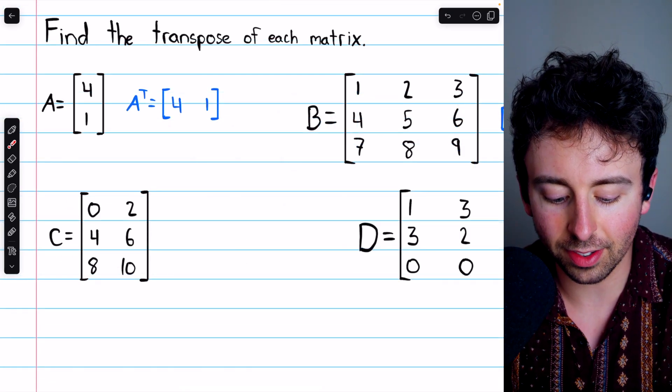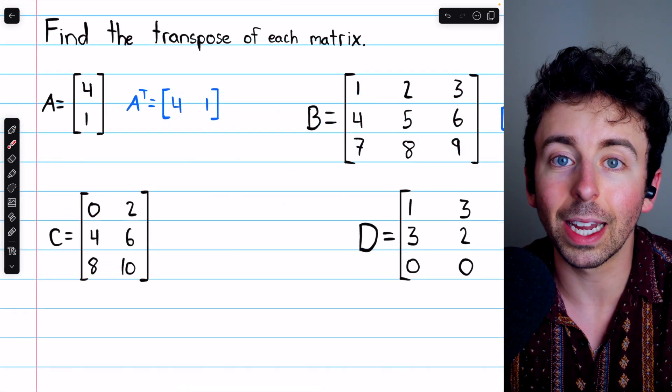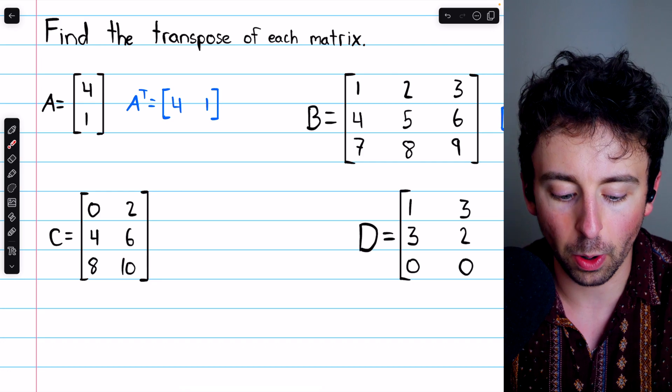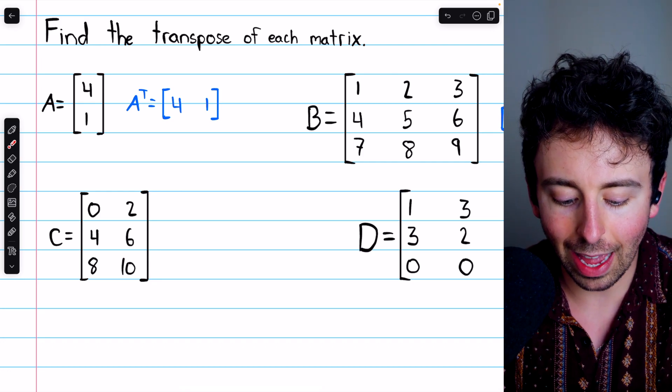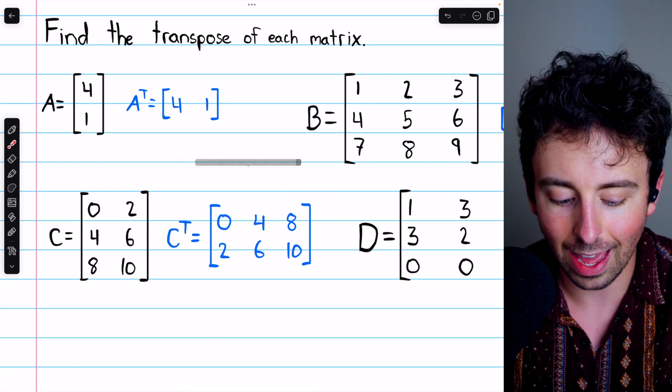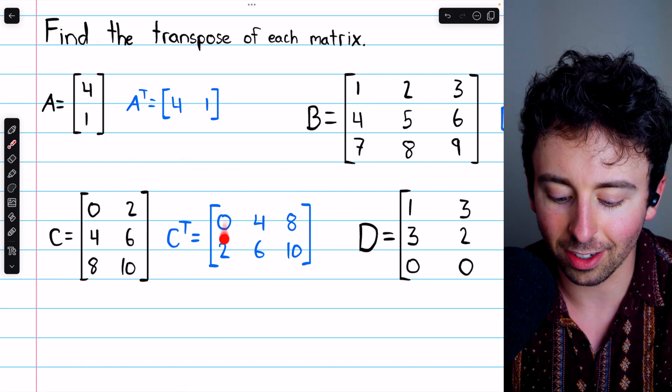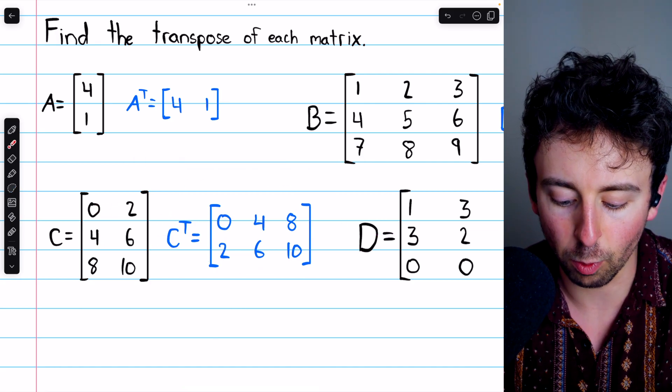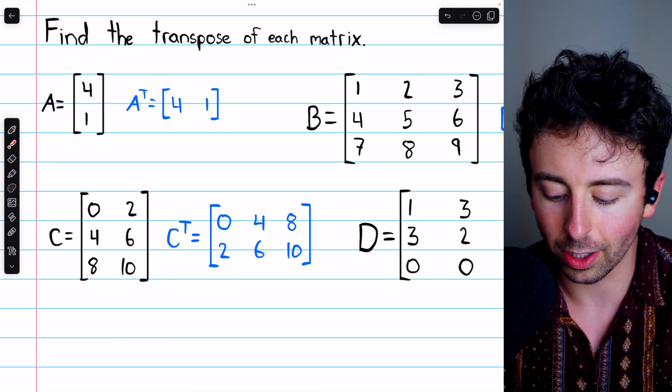Now what about C? Well, C is three by two, so C transpose will be two by three, and we'll have C's rows as its columns, and it looks like that. There's a row, and it's a column in C transpose. Second row, second column. Third row, third column.